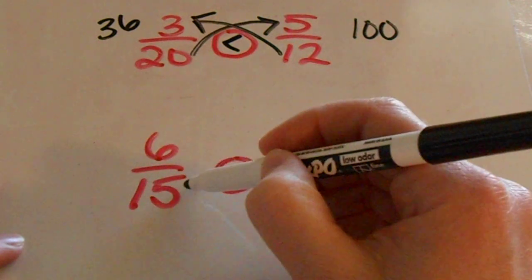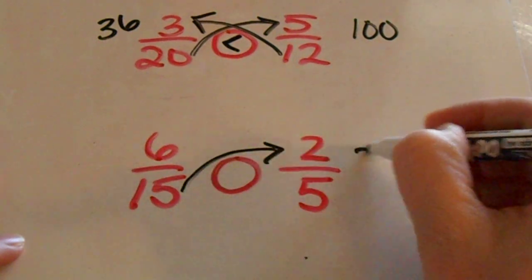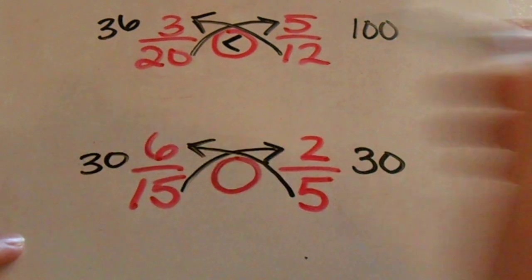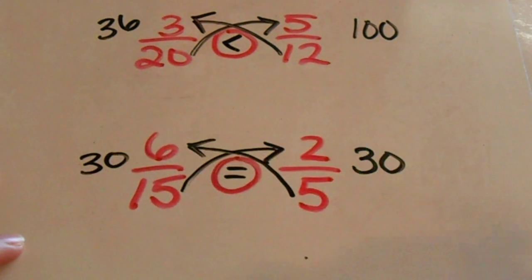So we're going to do the same method. Fifteen times two is thirty, five times six is thirty, so therefore these two fractions are equal.